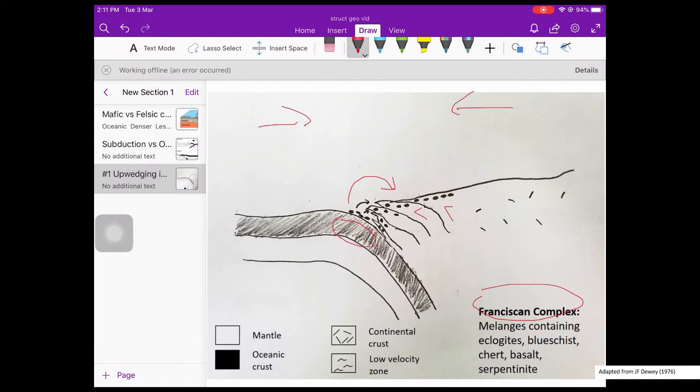What we see in the Franciscan complex are melanges that contain eclogites and blueschists, which are subduction-related metamorphic rocks. And these melange sequences also contain rocks like basalt, chert, serpentinite, which geologists believe to be ophiolites.